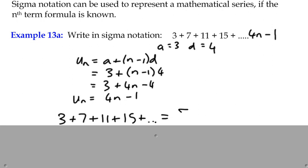the rule 4n minus 1, from n equals 1 to, in this case, infinity, because there is no end to it, we don't have a finite series.